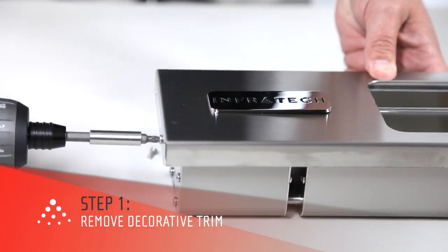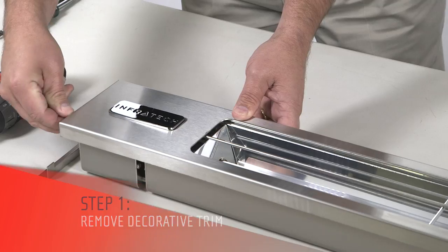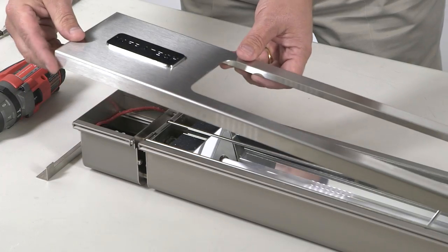The first thing you'll need to do is remove the two screws from one side of the decorative trim. Then lift up the trim and slide it over to release the front panel.